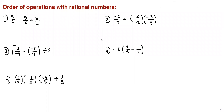We will continue with the order of operations with rational numbers. The first one here, we need to do division first, because our order of operations is BEDMAS: brackets first, exponents second, division and multiplication, and then addition and subtraction.